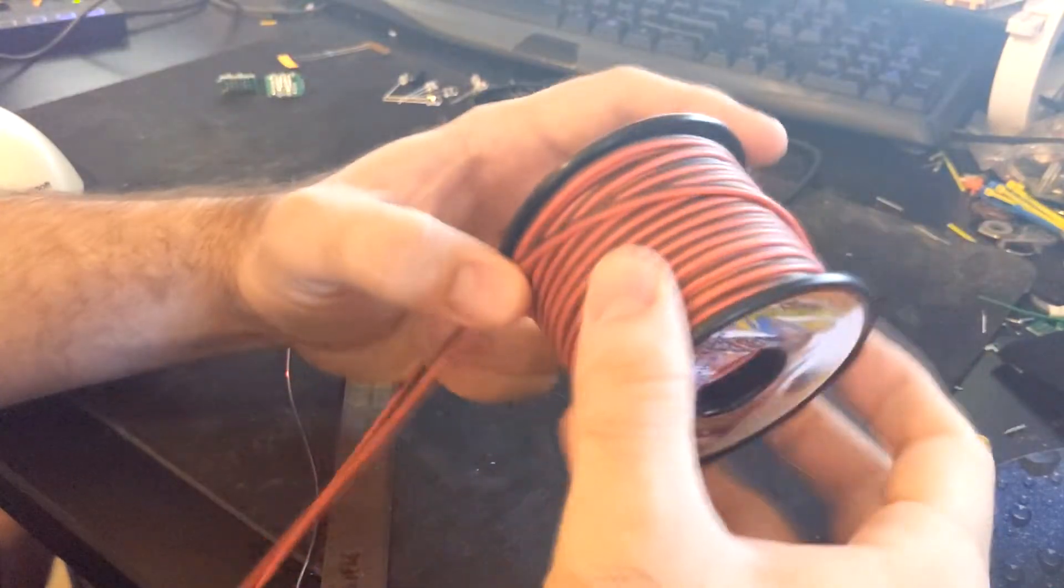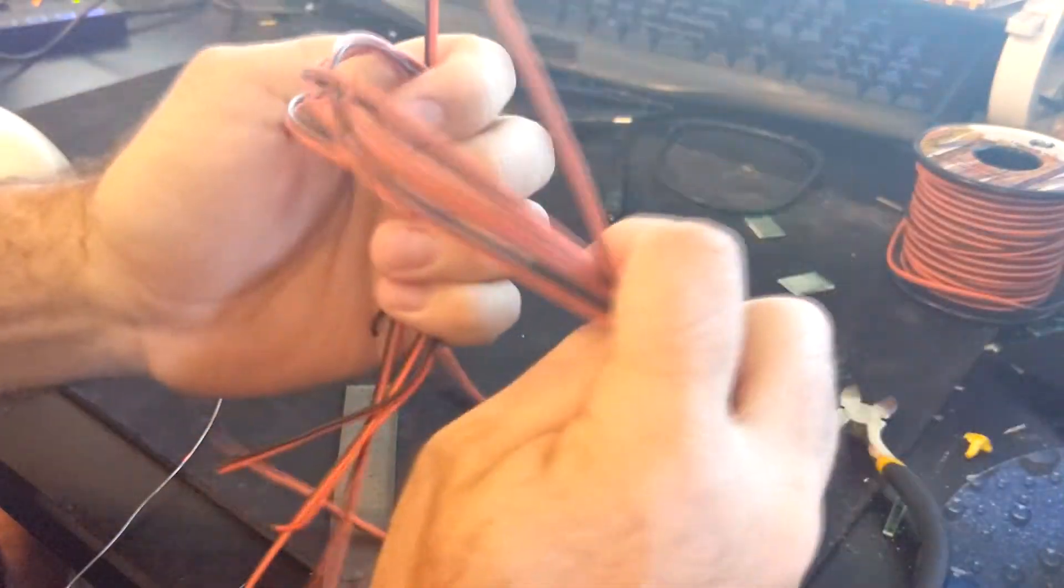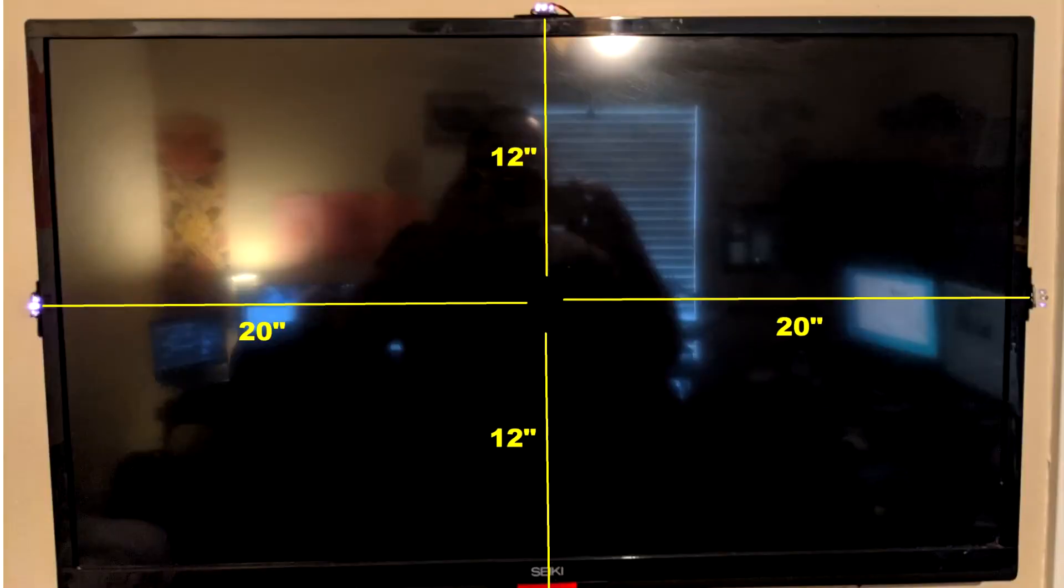Now we can cut some wires for the length of your TV. We'll need four sets of wire, two for the left and right and two for the top and bottom. For example if you have a 32 inch TV monitor you will need two 20 inch long cables for the horizontal and two 12 inch cables for the vertical.